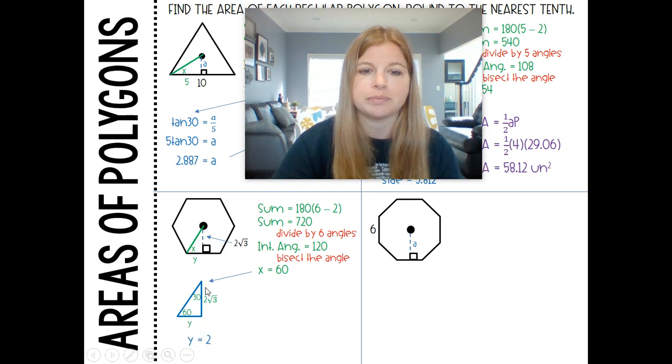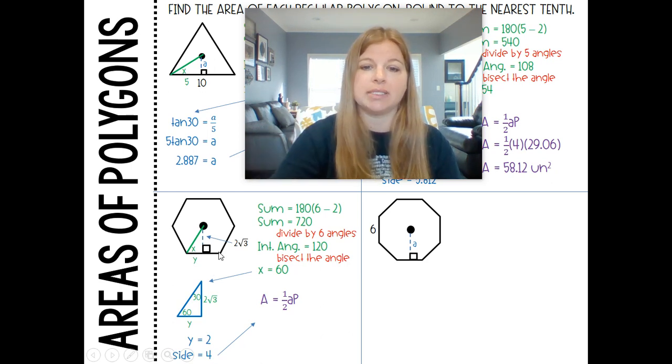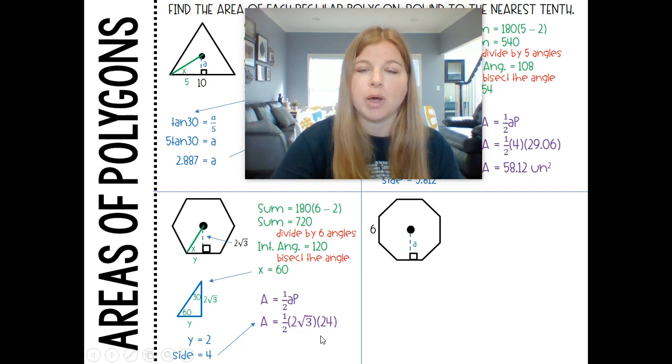If this is 2, then the entire side is 4. So now I have my formula: 1 half times the apothem times the perimeter. I know my apothem is 2 radical 3, my perimeter, if a side is 4, 4 times 6 is 24. Plug that into your calculator, and you should be getting 41.6 units squared.